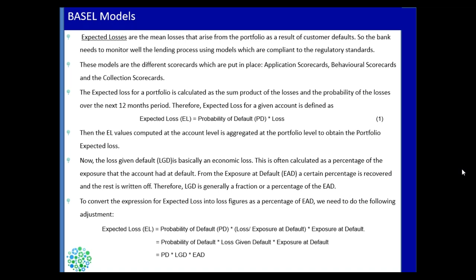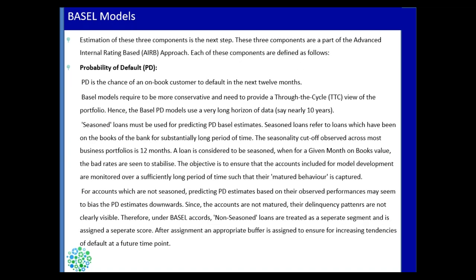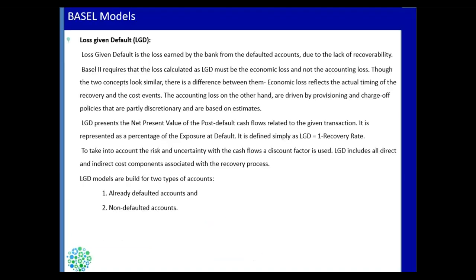The complete expected loss is calculated using a simple equation: Expected Loss = PD × LGD × EAD. This is how expected losses are fully calculated in the Basel model. There are three main components: PD, LGD, and EAD — and we will now study them in a bit more detail with some examples.